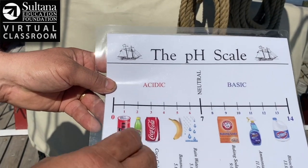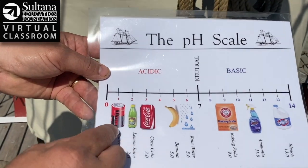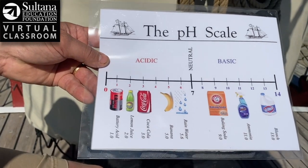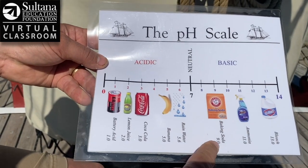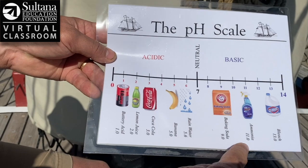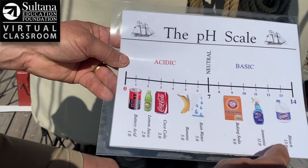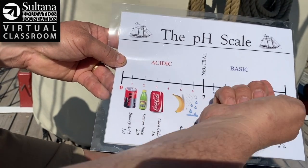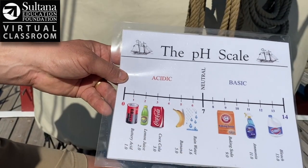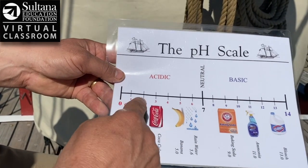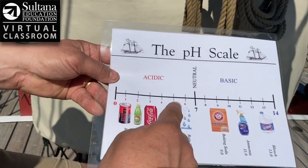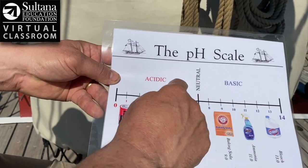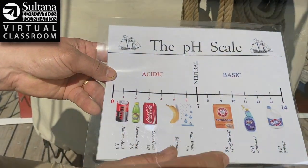I think we could all agree that a fish wouldn't want to be hanging out in battery acid. And then way up here on the basic end of the spectrum, you have baking soda at 9.0, ammonia at 11.0, and bleach at 13 — all above 7, or in the basic range. So if you're a fish, you don't want to be way down below 4 or way up above 10; you want that pH to be somewhere in the middle.